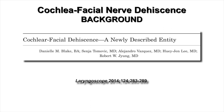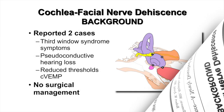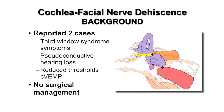Bob Young was the first to describe cochlea facial nerve dehiscence, publishing a paper in 2014 in the Laryngoscope. He reported two patients with third window syndrome symptoms, both having pseudo-conductive hearing loss and reduced thresholds on cervical vestibular evoked myogenic potentials — typical third window syndrome findings. Neither patient had surgery. The figure shows the facial nerve in yellow, cochlea and vestibular portion in purple, carotid artery in red, and internal auditory canal in orange. Label C represents the cochlea facial nerve dehiscence site, B the cochlea internal auditory canal dehiscence site, and A the cochlea carotid artery dehiscence site — all reported in the literature.